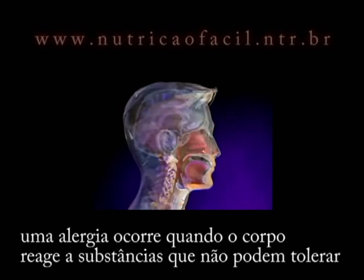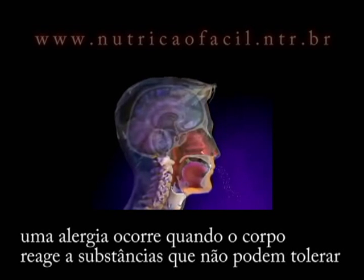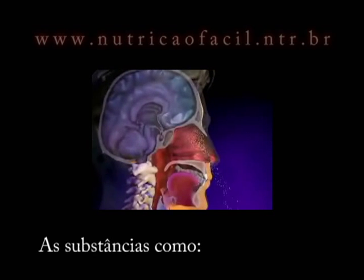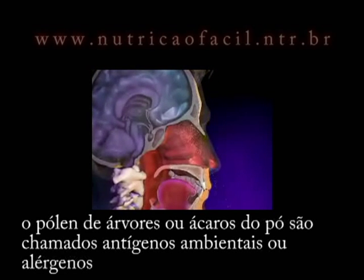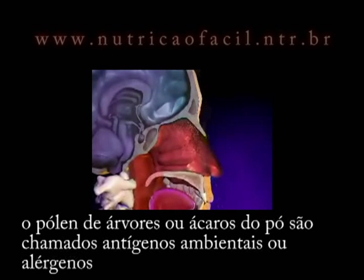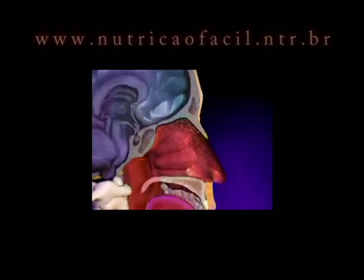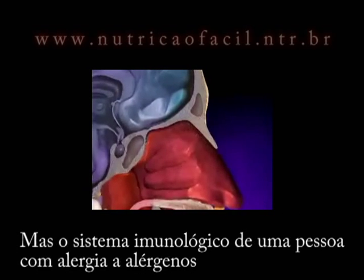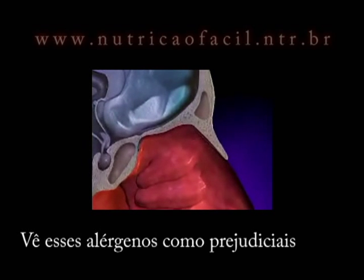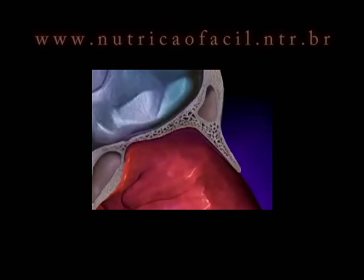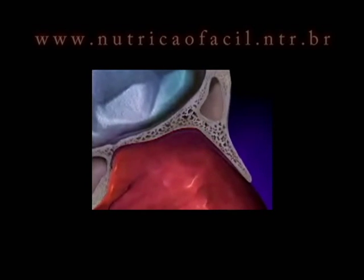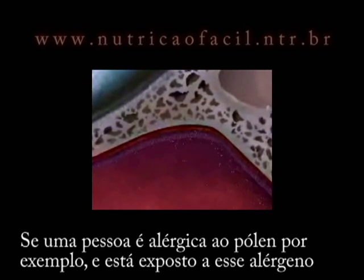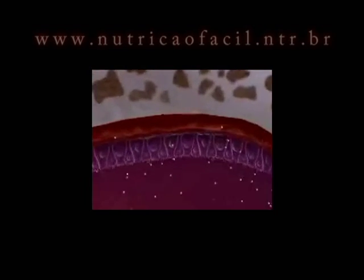An allergy occurs when the body reacts to substances it can't tolerate. These substances, like tree pollen or dust mites, are called environmental antigens or allergens and are normally harmless, but the immune system of a person with allergies views the allergens as harmful. If a person is allergic to pollen, for example, and is exposed to this allergen, here's what happens during the body's immune response.